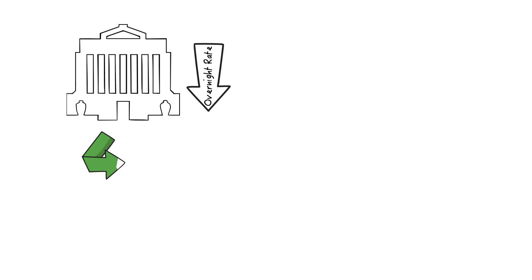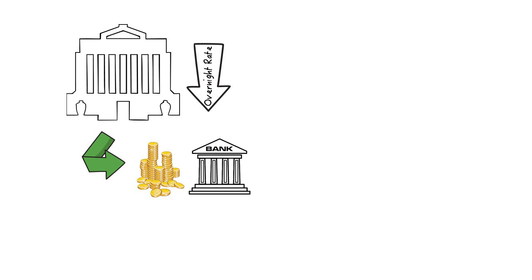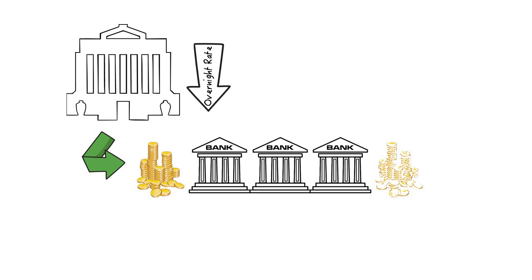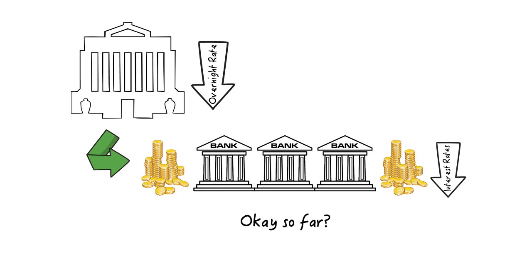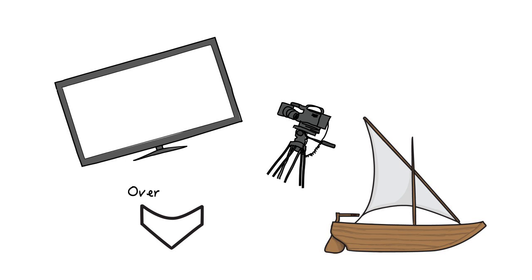Now, when the Bank of Canada wants to help the economy get out of a recession, it will lower the overnight rate. This leads the banks to borrow more from it, the amount of money in the economy grows, and this leads the banks to lower their interest rates on mortgages and car loans, for instance. All these purchases that consumers are now making will help the economy pick up steam and pull it out of its recession. So remember, a lower overnight rate leads to an increase in economic activity.